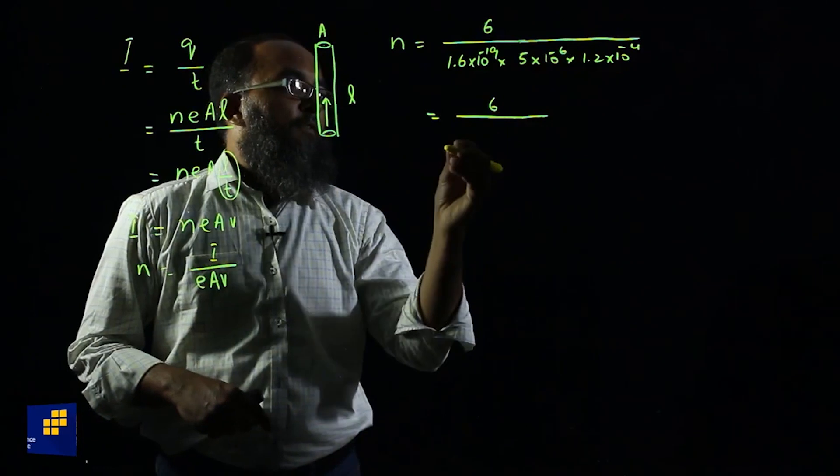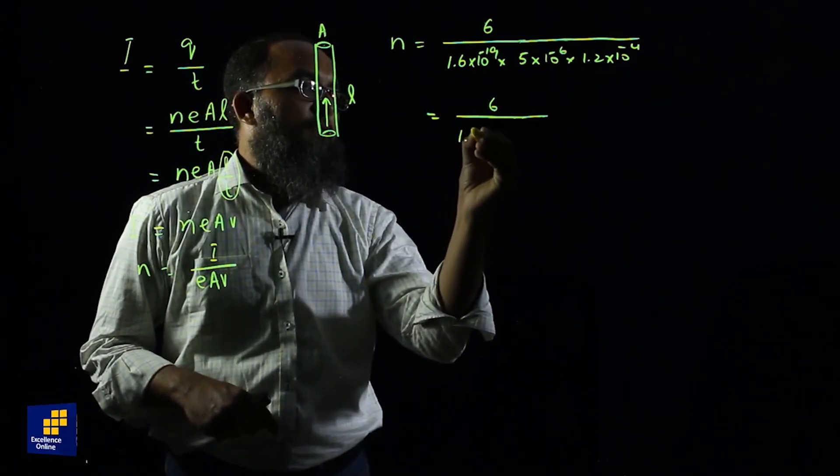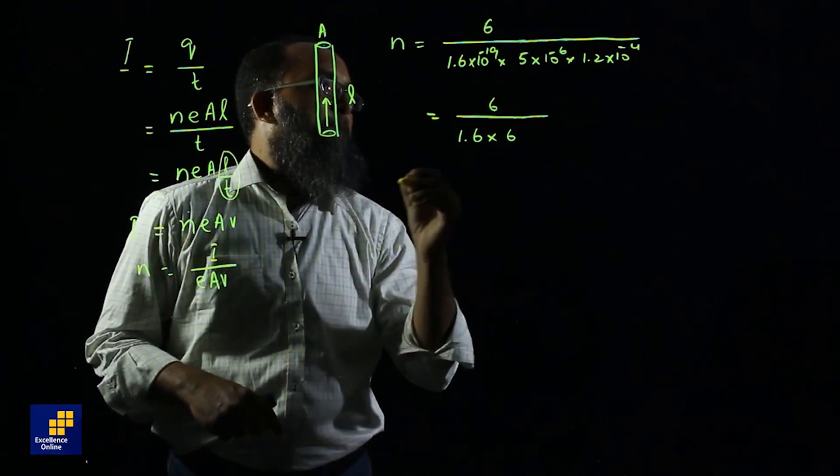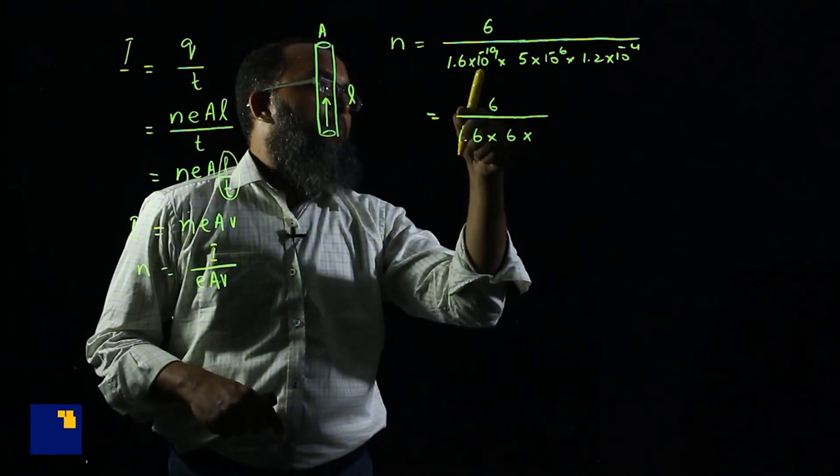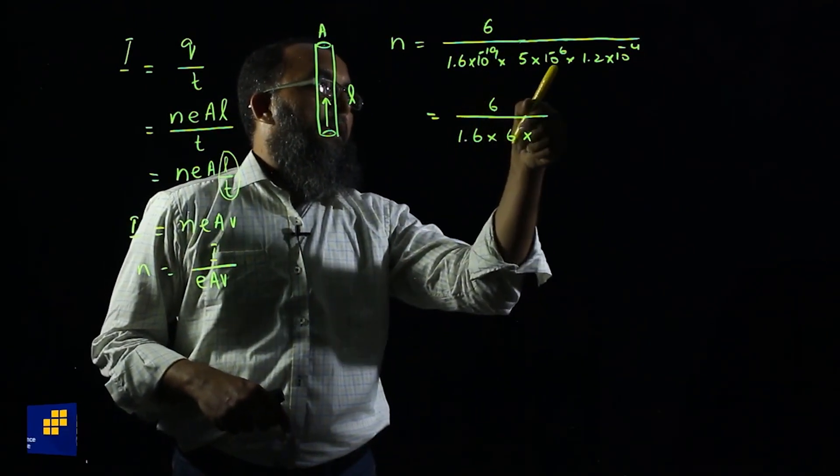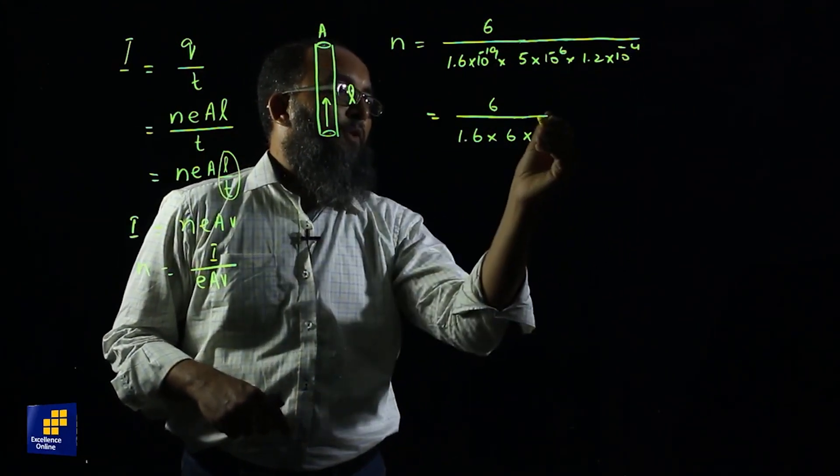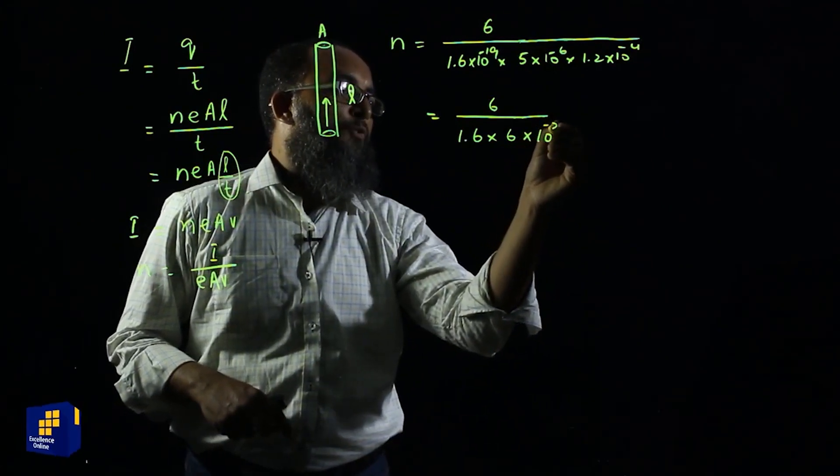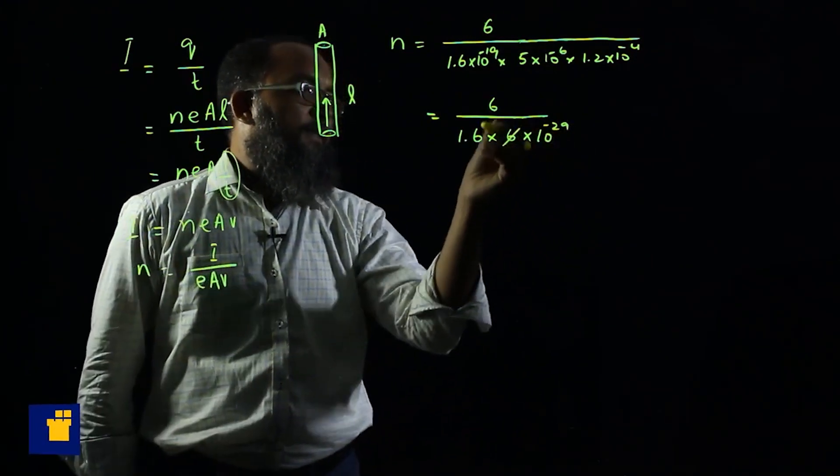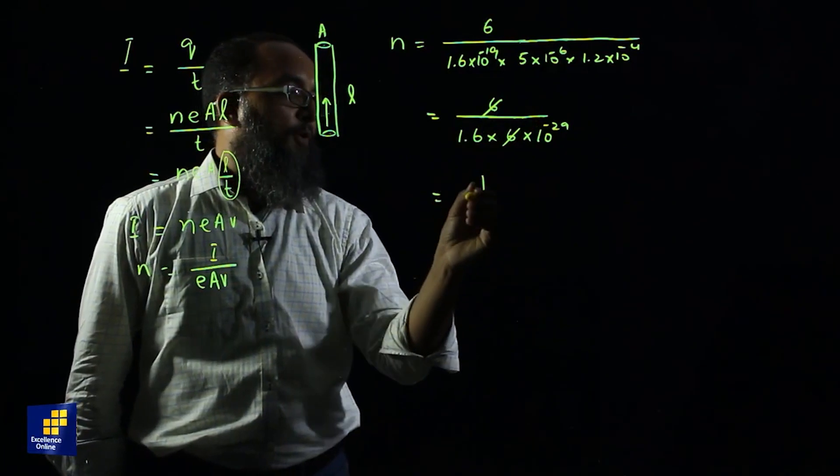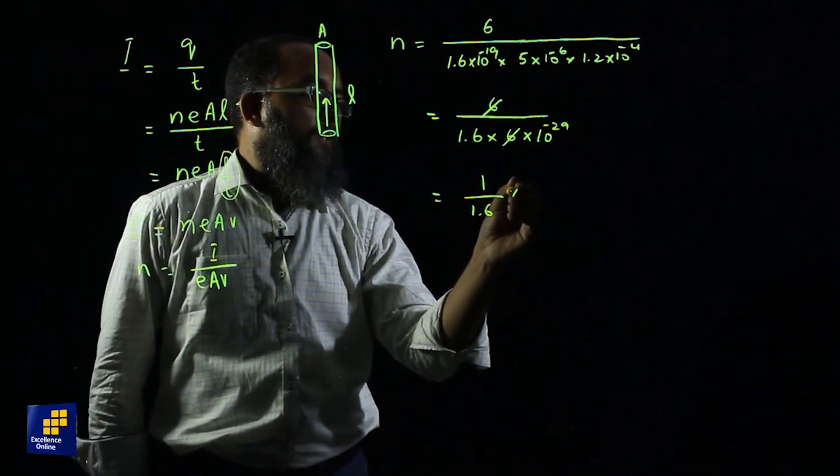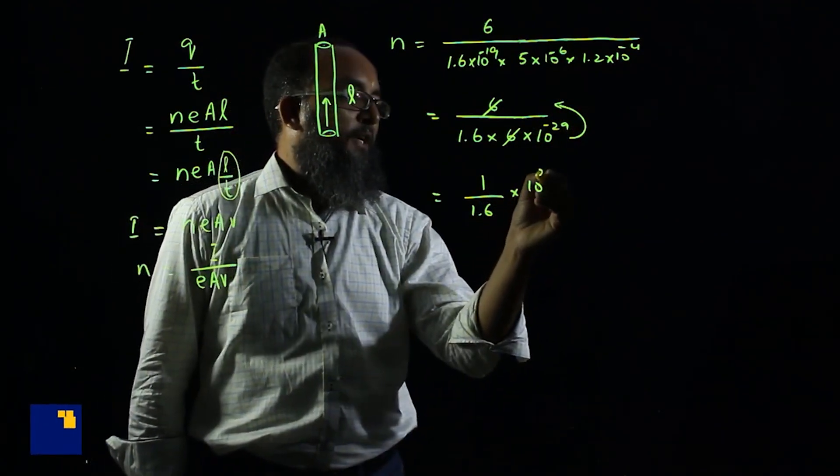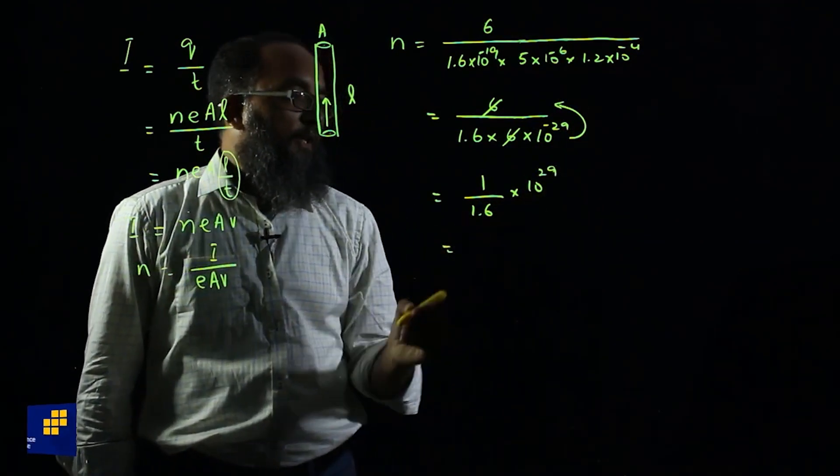1.6 into 1.2 into 5 gives us 6. Exponential 10 power minus 19, 10 power minus 6, 10 power minus 4, all these exponents will combine into 10 power minus 29. This 6 is cancelled by 6. So we get 1 upon 1.6 into 10 power, bringing the negative exponential power to the numerator gives 10 power plus 29.